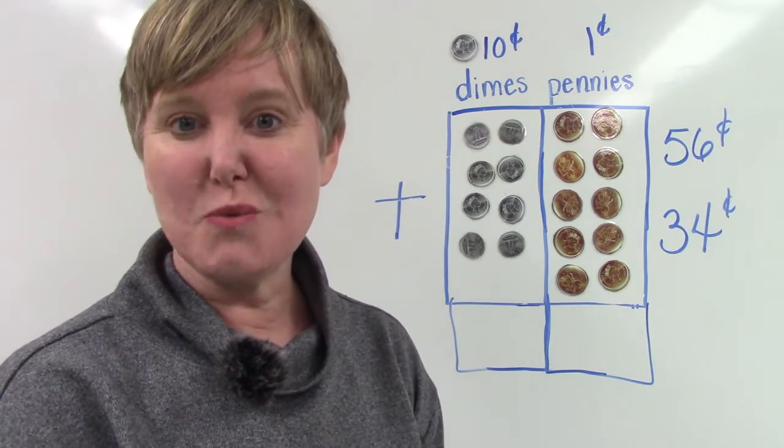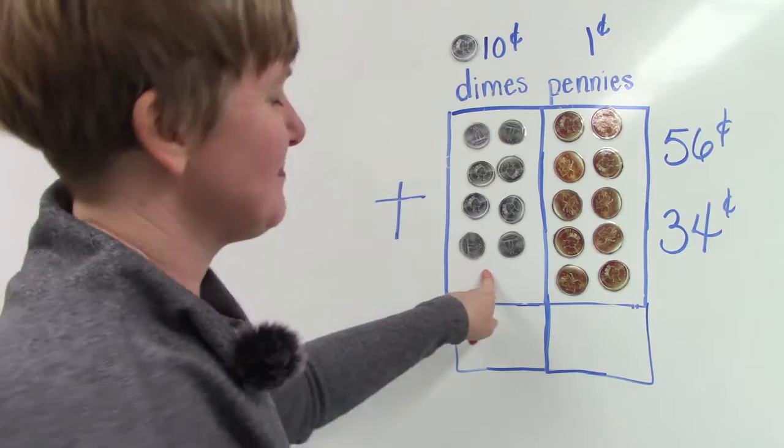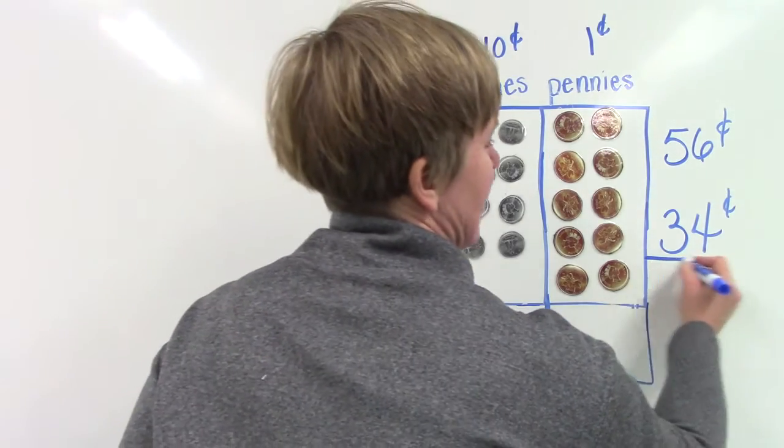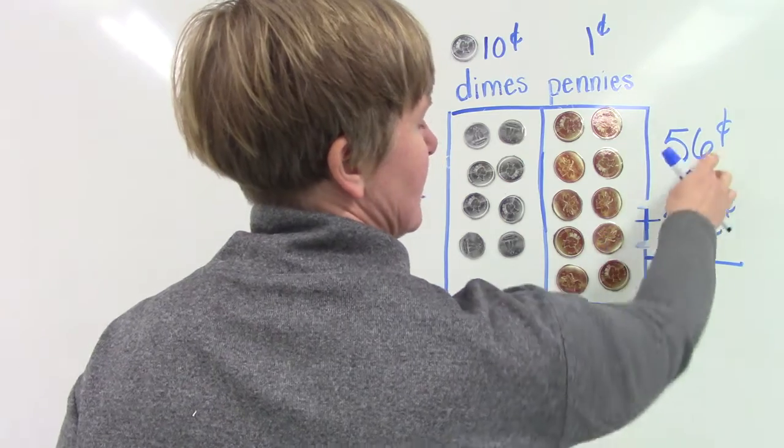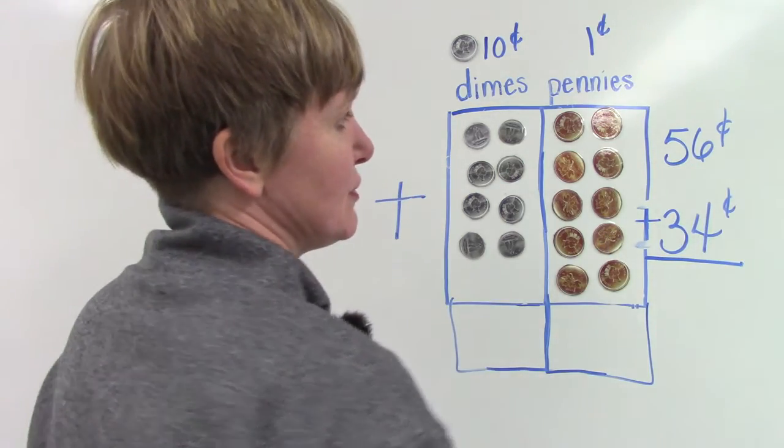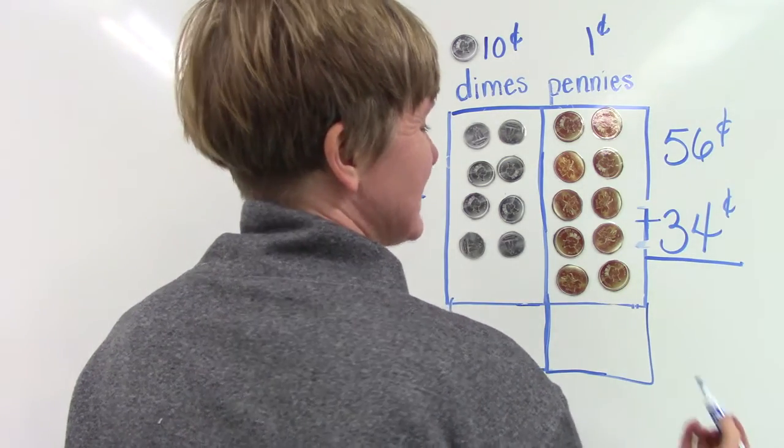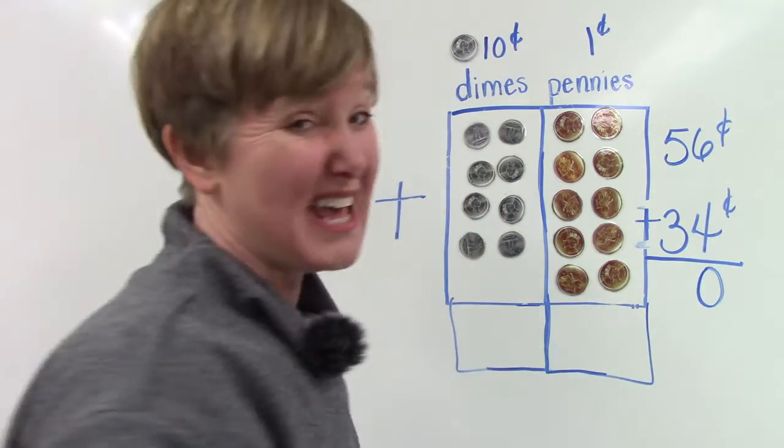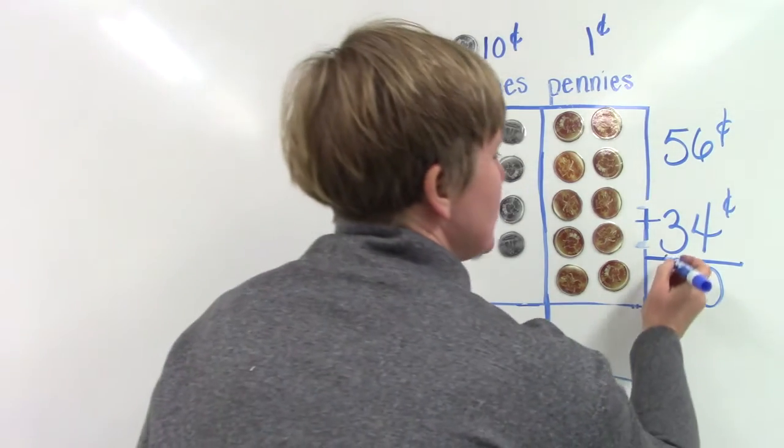What do you know about the number 10? It has two digits instead of one and we can trade the 10 pennies for a dime. If we had 56 plus 34 and we had 6 plus 4 equaling 10, we could put the zero in the ones place or the pennies place.